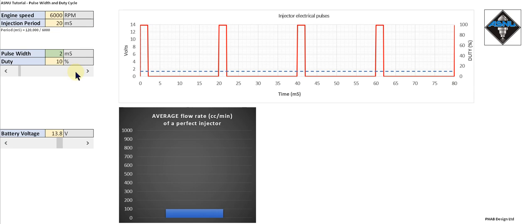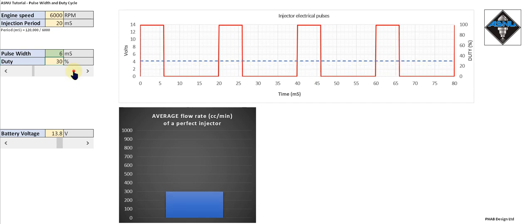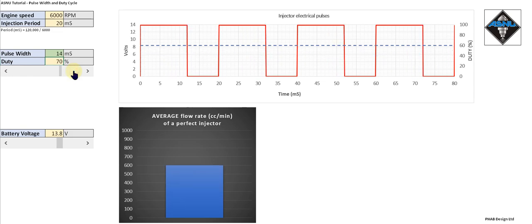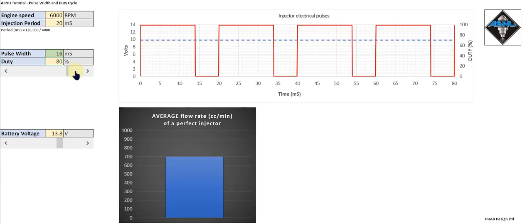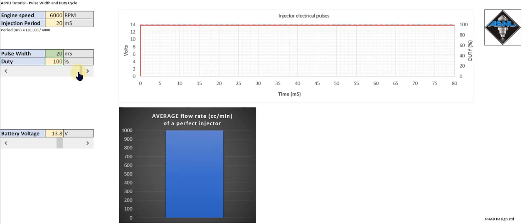If we continue to increase the pulse width to the injector, and hence the duty cycle, we can see that the flow goes up proportionally with the increase in duty cycle. We can go all the way up to 100 percent, so the injector is permanently on, and that is the static flow condition — the absolute maximum flow we can achieve from this injector.